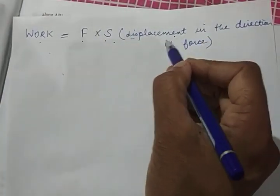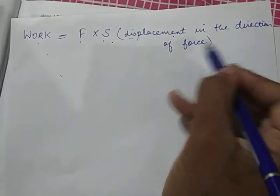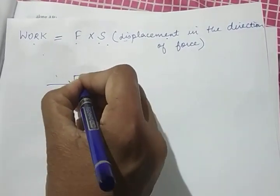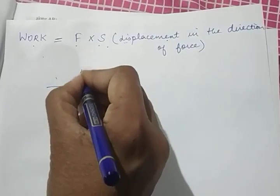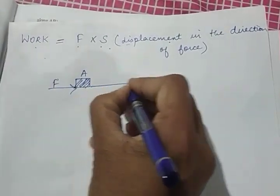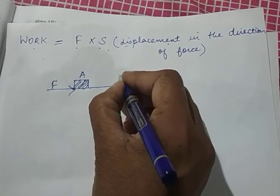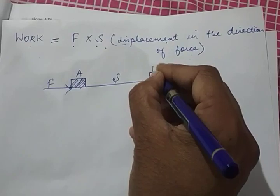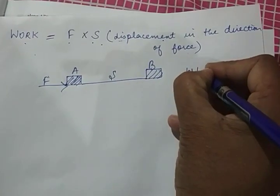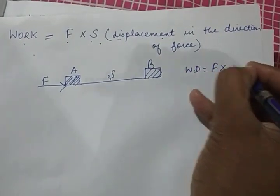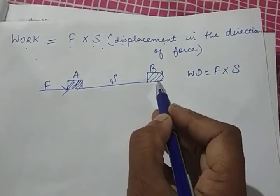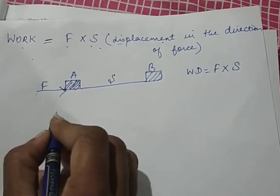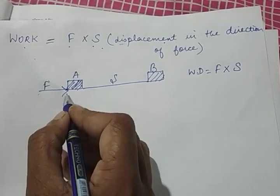The important condition is that displacement should be in the direction of force. For example, if I apply a force on a body A and the body undergoes a displacement S, reaching a new position B, then work done will be F into S. Force is applied and displacement is taking place in the direction of force.